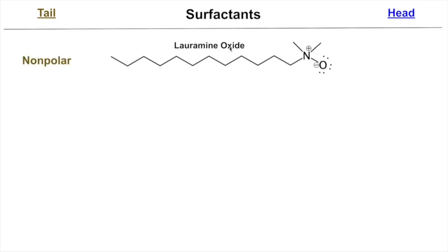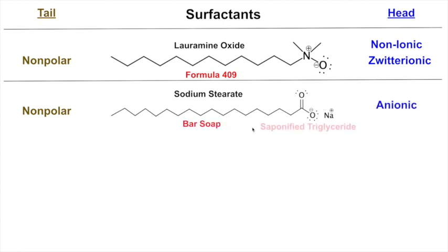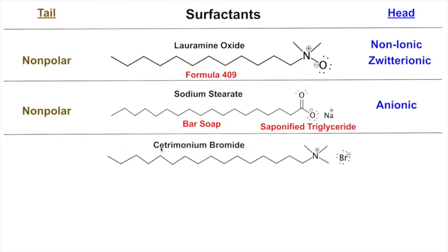Lauryl amine oxide is in 409 — non-ionic, zwitterionic. What about sodium stearate? This is the most historically used soap — what bar soap is made out of, traced back to the Babylonians thousands of years ago. It has the non-polar tail, and the head is anionic — it's got the negative charge. This is bar soap, and it can be made from saponified triglycerides. Remember when we did biodiesel synthesis — if instead of methoxide you add hydroxide, you get this via saponification.